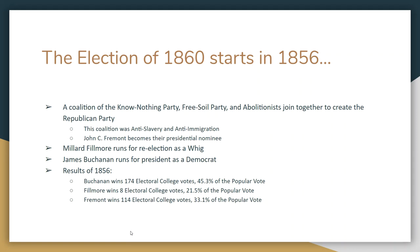John C. Frémont becomes their presidential nominee in 1856. I mentioned him when we talked about the California Trail, the Santa Fe Trail, and the Oregon Trail. He was originally a guide on the Oregon Trail and then helped map out the California Trail during Manifest Destiny, so he's a pretty big name. President Millard Fillmore runs for reelection as a Whig, and James Buchanan runs as a Democrat. Fillmore's defeat is one of the worst ever for a sitting president.